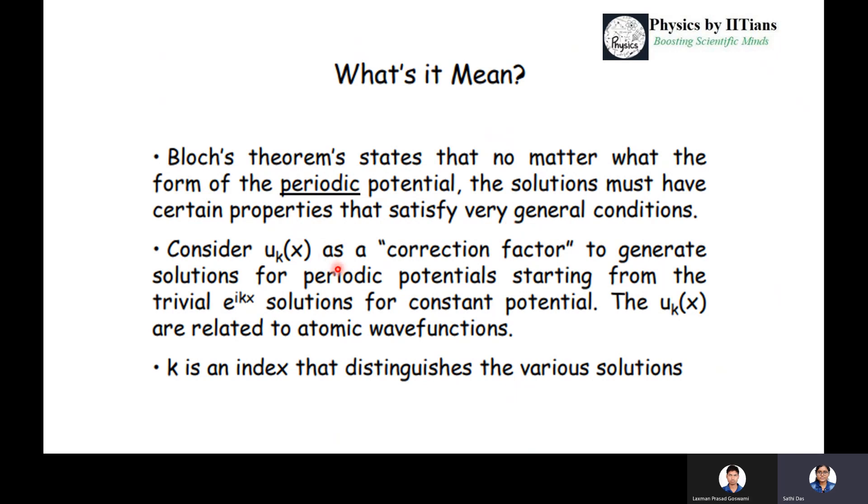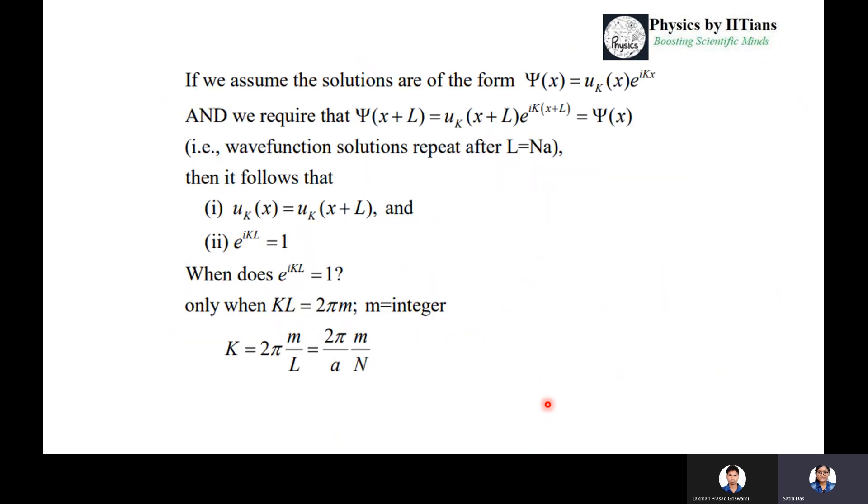Now suppose this u_k(x), you consider it as a correction factor to generate the solution for this periodic potential starting from the e^(ikx) solution for a constant potential. This u_k(x) is related to the atomic wave function, and this k is the index that will distinguish between the various different solutions: u_1(x), u_2(x), u_3(x) and so on.